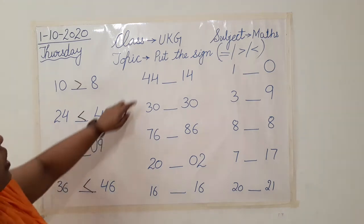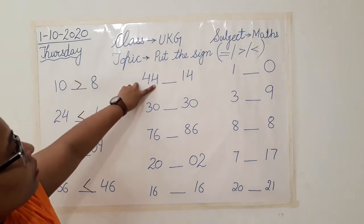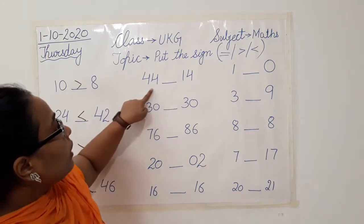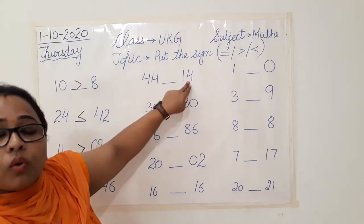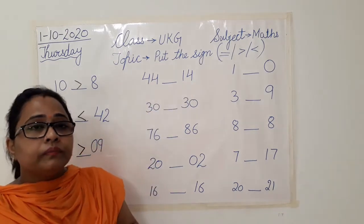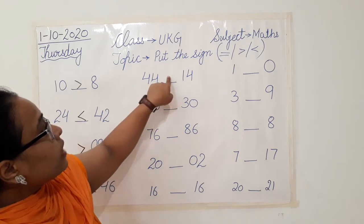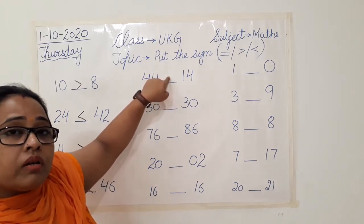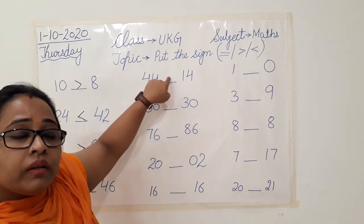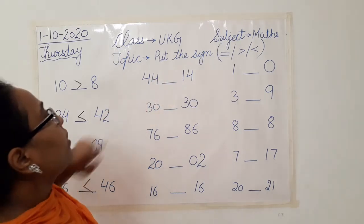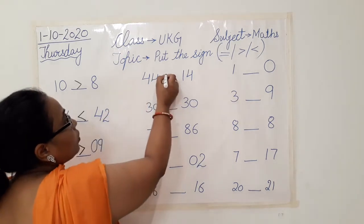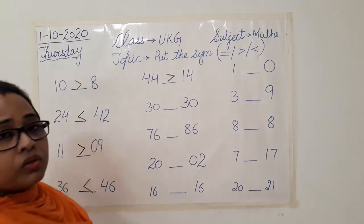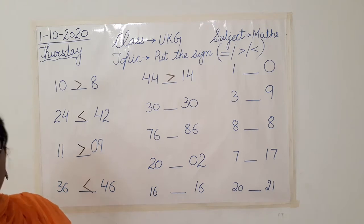Now here we have forty-four and fourteen. Compare the numbers — forty-four and fourteen. Where are you going to put the sign? We will put the sign and the mouth will open towards the greater number. Forty-four is greater. So we will put the greater mark here like this.